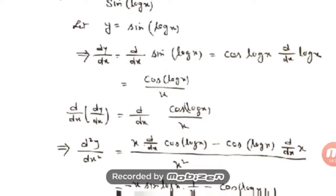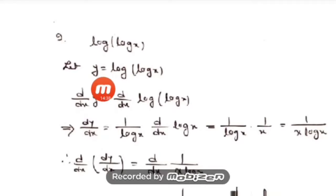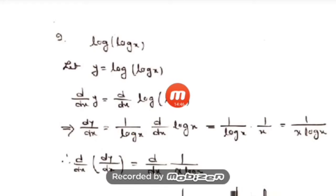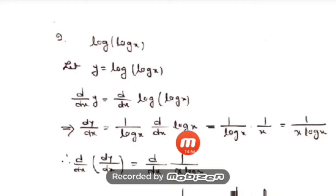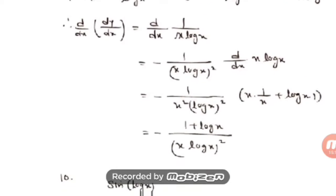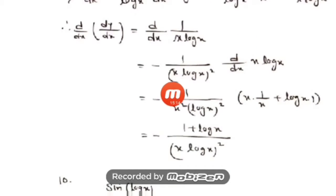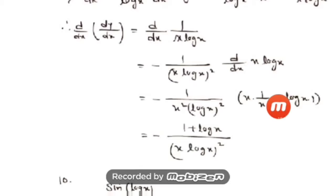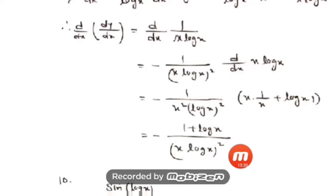Question number 9: y = log(log x). Taking derivative: dy/dx = 1/log(x) · d/dx(log x) = 1/log(x) · (1/x) = 1/(x·log x). Now differentiate 1/(x·log x) again using the formula for 1/x: d²y/dx² = −1/(x·log x)² · d/dx(x·log x). Using product rule: d/dx(x·log x) = 1 + log x. So d²y/dx² = −(1 + log x)/(x·log x)².